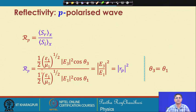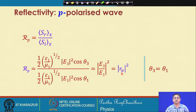Since theta1 equals theta3, the cosine terms cancel, and we are left with E3² / E1², which is nothing but |r_p|². So the energy reflection coefficient equals the square of the amplitude reflection coefficient r_p. This is an interesting and direct relationship between the energy and amplitude reflection coefficients.